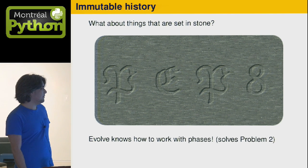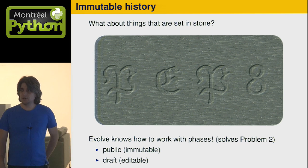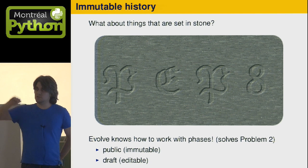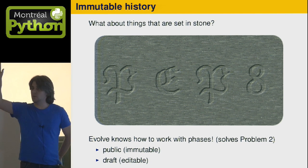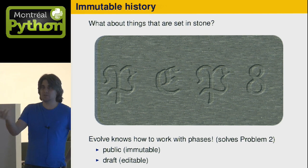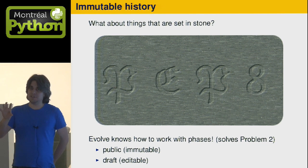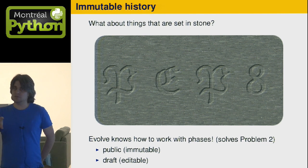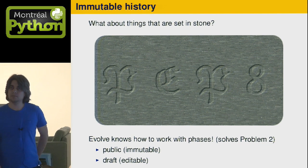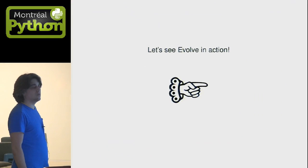We have something called phases. Certain commits are public and immutable — once a commit goes to a public server, it can no longer be edited. Some commits are draft: when you're sharing between friends, there's an understanding that these commits can still change around.